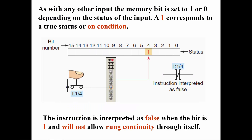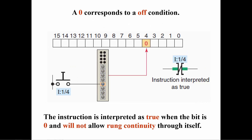The examine if open instruction behaves very much like a normally closed relay contact. When an external switch is closed, a 1 is placed at the address of the switch in the input table, and the examine if open instruction becomes false and will not allow rung continuity, much like a normally closed relay contact will not allow current to flow when its coil is energized.